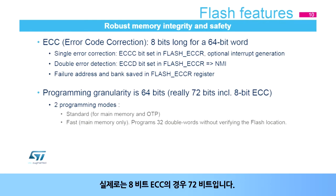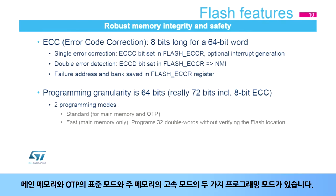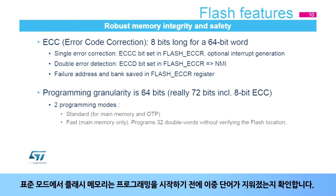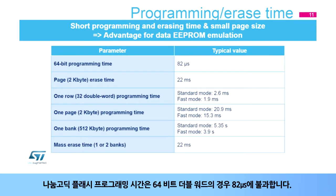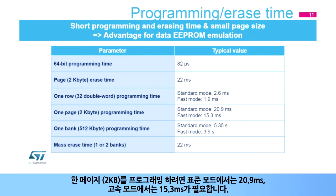The programming granularity is 64 bits — 72 bits including the 8-bit ECC. There are two programming modes: standard mode for the main memory and OTP, and fast mode for the main memory only. In standard mode, the flash memory checks that the double word is erased before launching the programming. In fast mode, 32 double words are programmed without verifying the flash location. The flash programming time is only 82 microseconds for 64-bit double words. To program one page (2 kilobytes), 20.9 milliseconds are needed in standard mode and 15.3 milliseconds in fast mode.